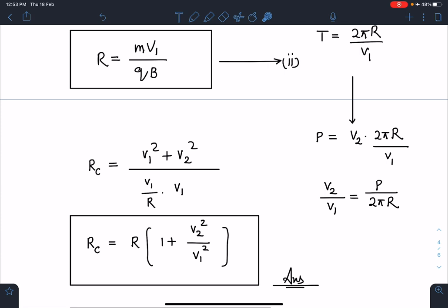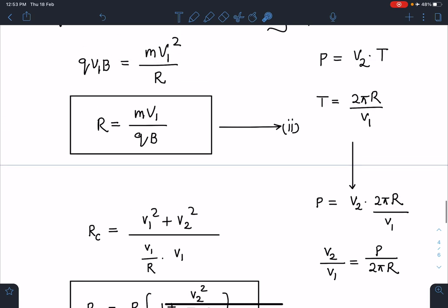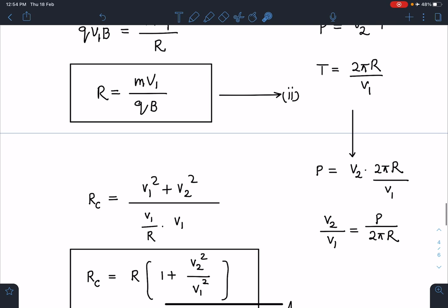By using these two equations, if I eliminate the T value here, I'm going to get P = v₂ times T, which is 2πR/v₁. So directly I'm going to get the v₂/v₁ value here.